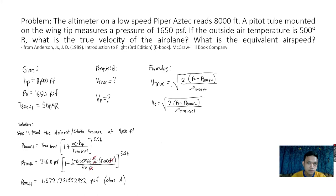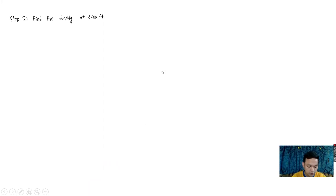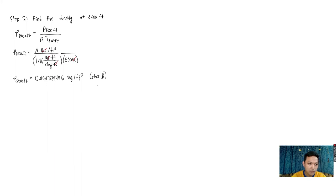Our second step is to find the density at 8,000 feet. In this situation, we can't use the gradient formula of density because we have no given density altitude. However, since we have pressure at 8,000 feet, we can use the equation of state. From the equation of state formula, inputting the values and solving through a calculator, we have density at 8,000 feet equals 0.0018329496 slug per feet cube.